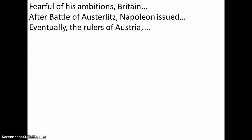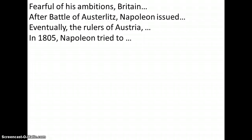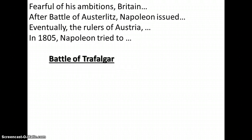Eventually, the rulers of Austria, Prussia, and Russia all signed peace treaties with Napoleon because he was gaining land. In 1805, Napoleon tried to remove the threat of the British Navy. We will see next time the Battle of Trafalgar and the results of that — does it end well for Napoleon or not? This is Mr. Kays with 23.3C. See you down the road.